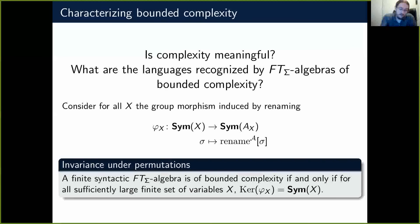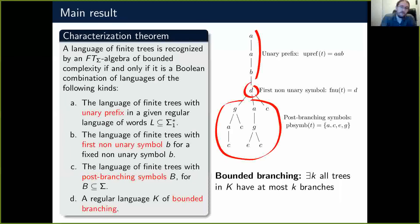This means that whenever X is large in an algebra of bounded complexity, the elements are invariant under renaming in their permutations. This is quite an interesting property, and it allowed us to prove our main characterization theorem.